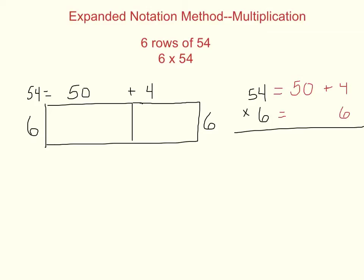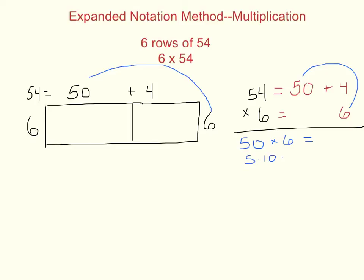Now with expanded notation, we find the area or the product of the tens section by taking that 50 and multiplying it by 6. Another way to look at that is on the right — we see the same thing. When we have 50 groups of 6, we can break that down into 5 times 10 times 6. Five times 6 is 30, and 30 times 10 is 300.